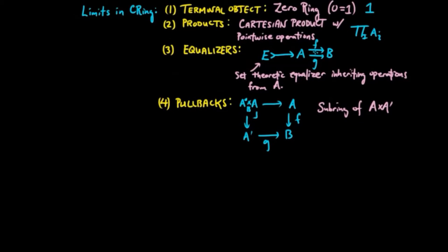The co-limits in commutative rings are a little bit more interesting. We have the initial object as being the integers. In a lot of categories, we'll write it as zero, but that makes it a little bit confusing since we sometimes will write the zero ring as a zero. So we'll just write it as the usual bold-faced Z.